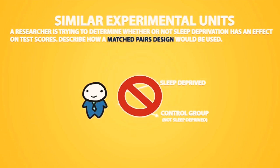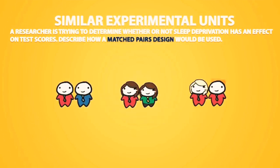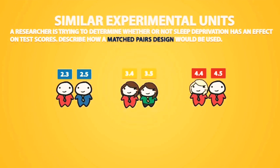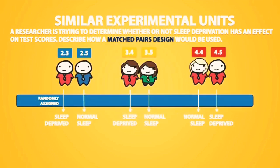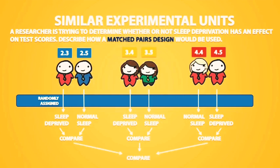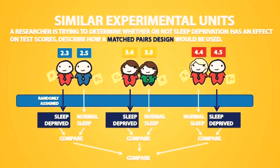Instead, we could pair up students with similar GPAs. For example, the two students with the highest GPAs would be matched together, and the two students with the lowest GPAs would be matched together. Then each pair is split up and randomly assigned to one of the two treatments — one person gets the sleep deprived treatment and the other gets a normal amount of sleep. We compare the results for each pair, and across all pairs. If sleep deprived people consistently get lower test scores, we can say that sleep deprivation was the cause.